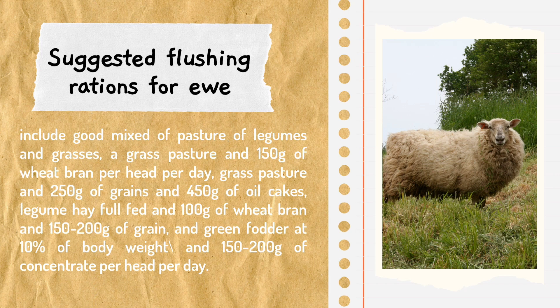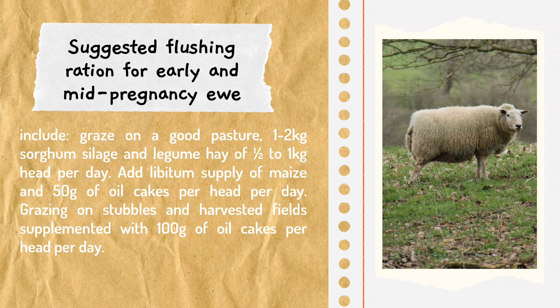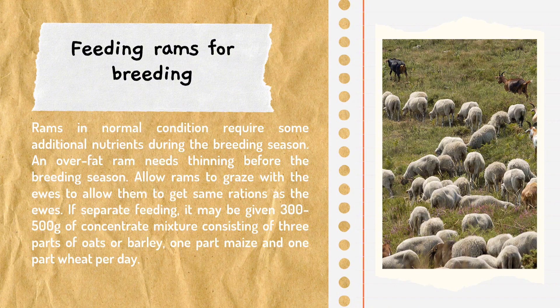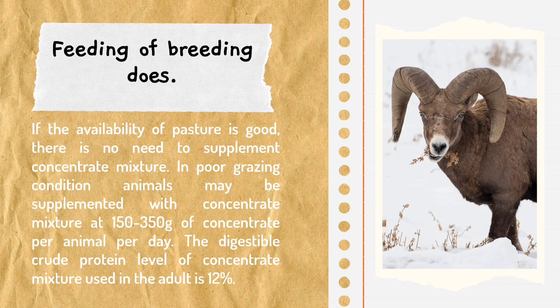A grass pasture and 150 grams of wheat bran per head per day is suggested. For flushing rations for early and mid-pregnancy: graze on good pasture, one to two kilograms of sorghum silage, and legumes at one-half to one kilogram per head per day. For feeding breeding rams in normal condition, some additional nutrients are required during the breeding season. For feeding breeding does, if the availability of pasture is good, there is no need to supplement with concentrate mixture.